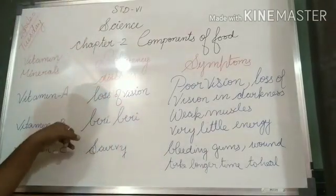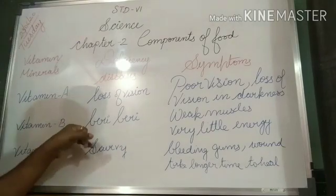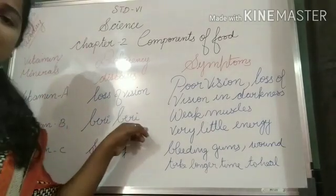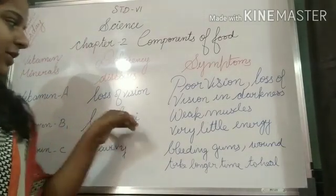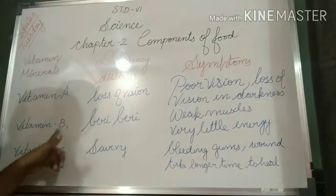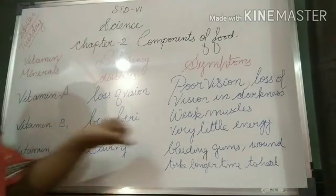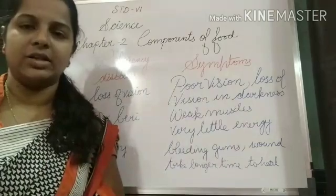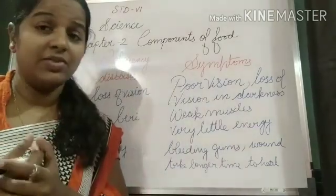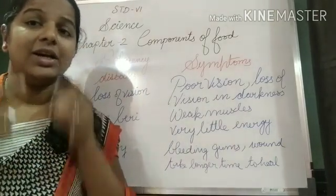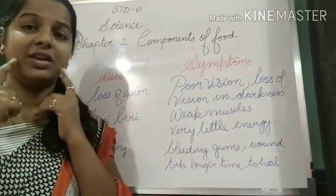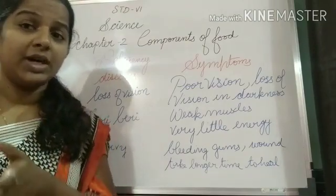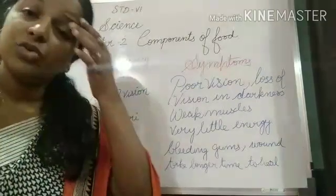Next is Vitamin B1. Keep in mind that Vitamin B1 relates to weakness of muscles and very little energy — muscles become weak. It also relates to a nerve condition affecting the limbs.